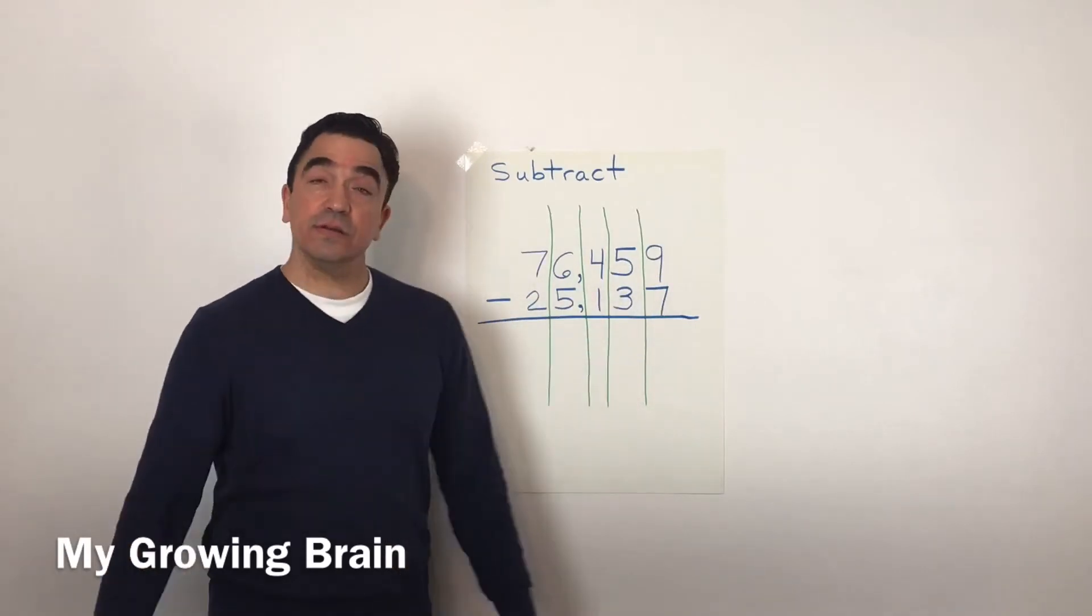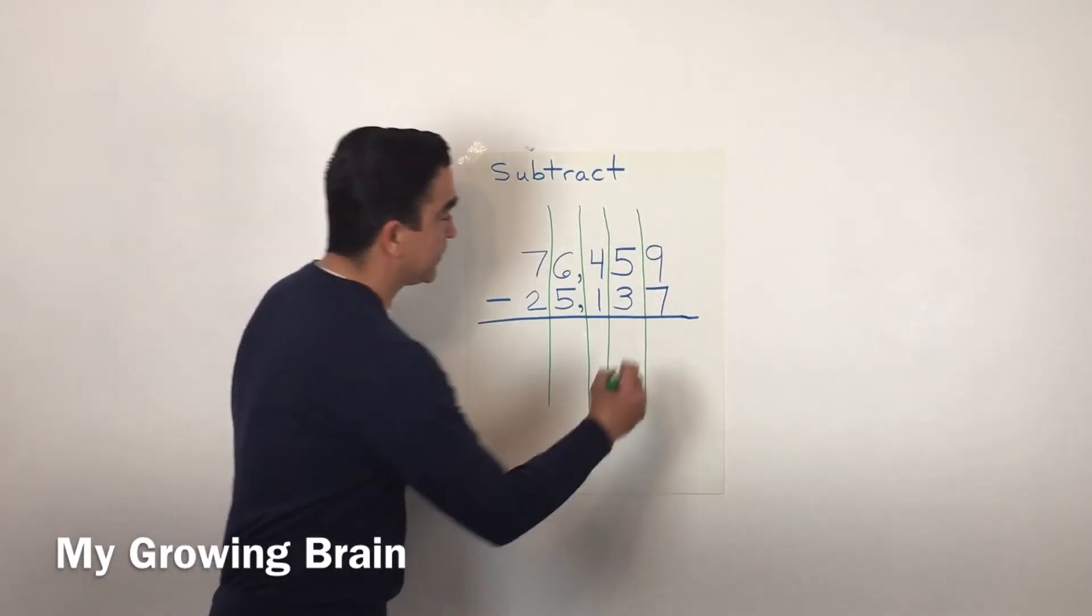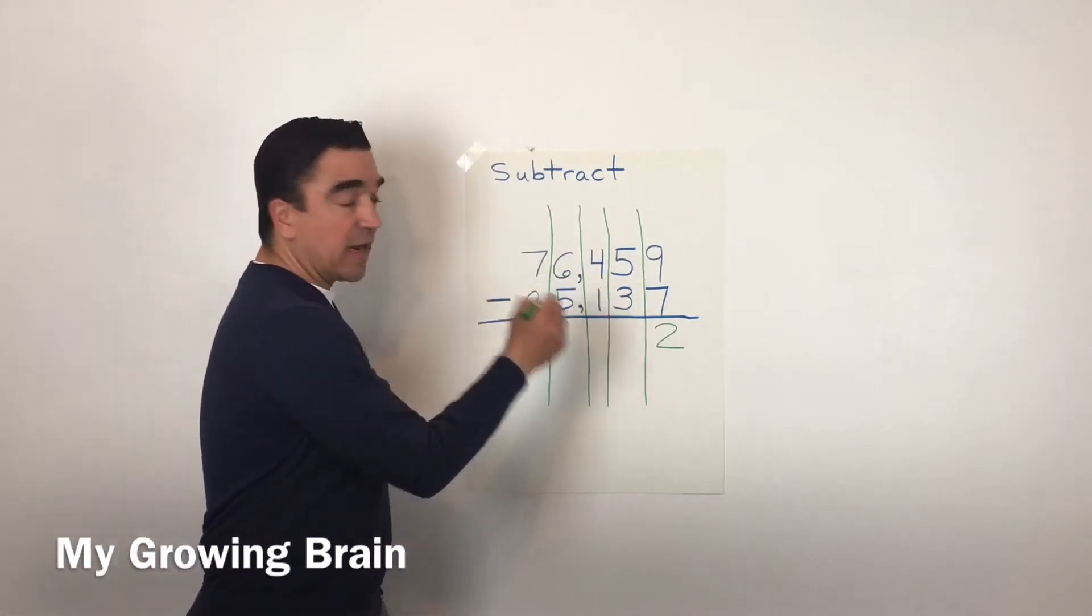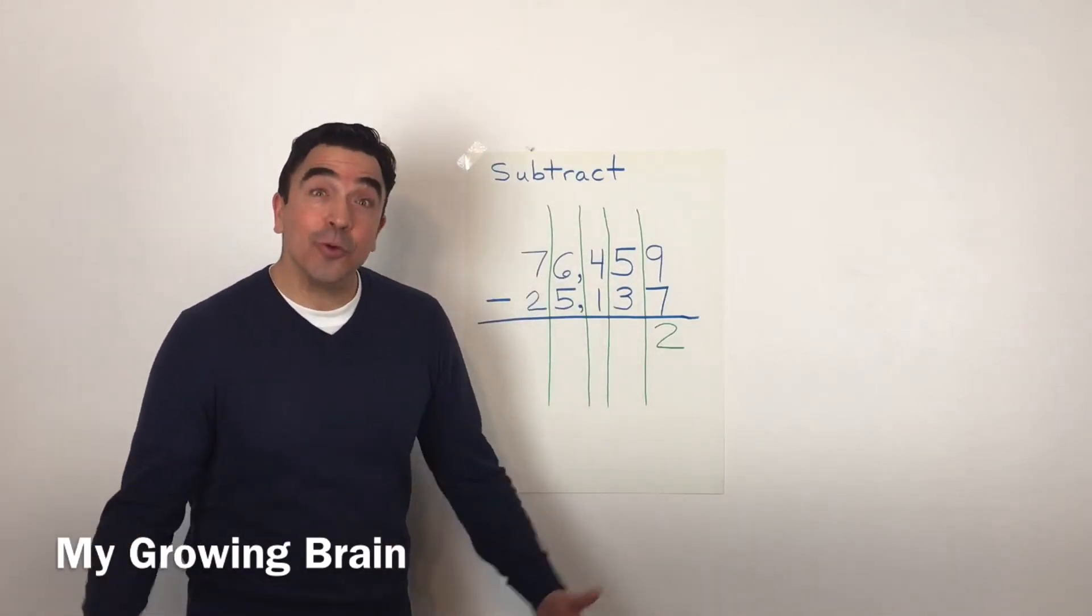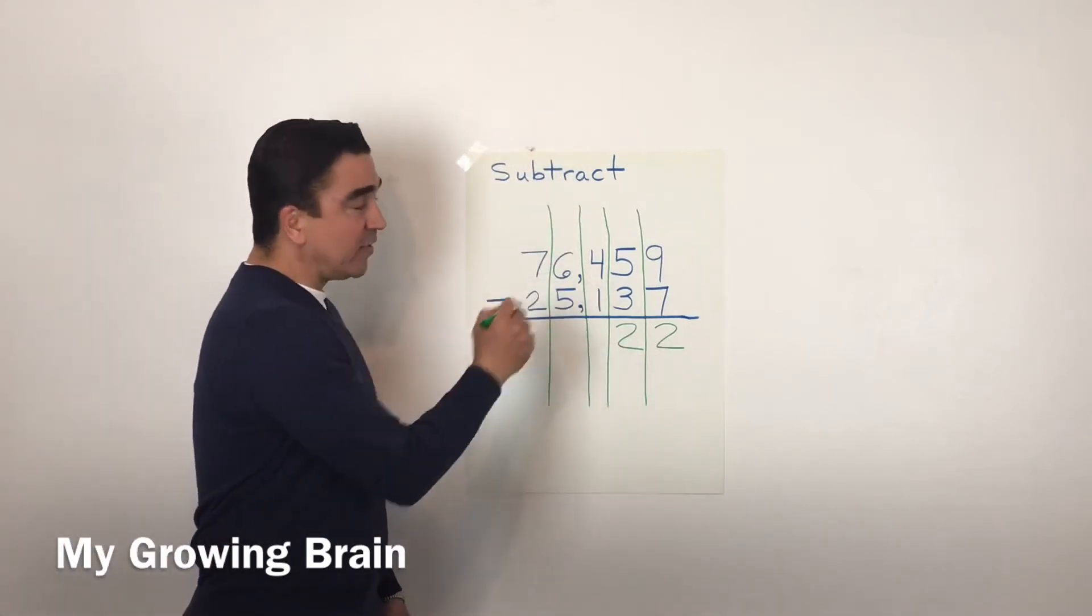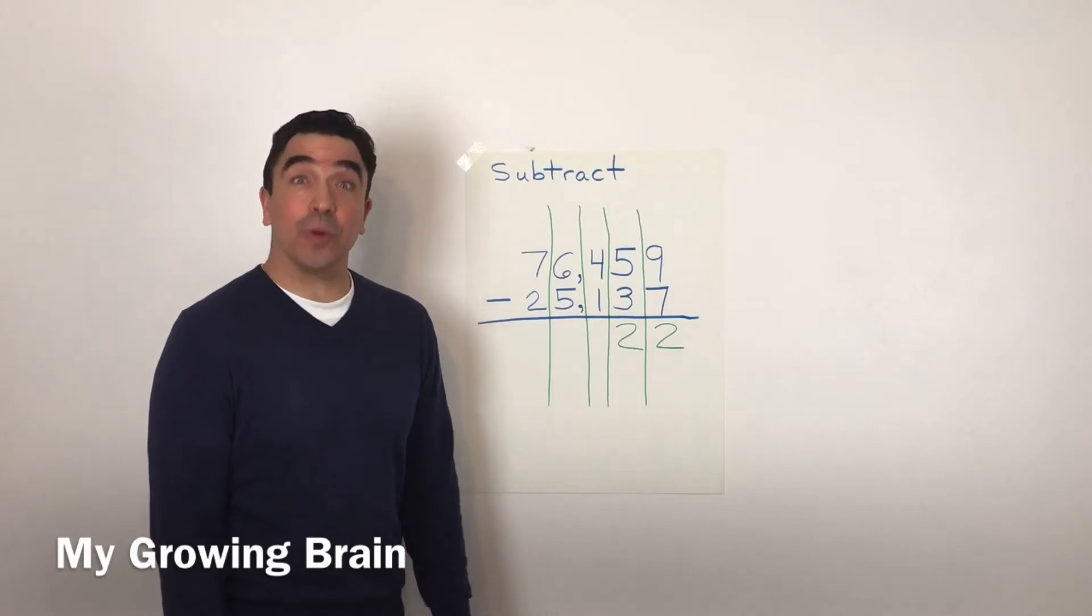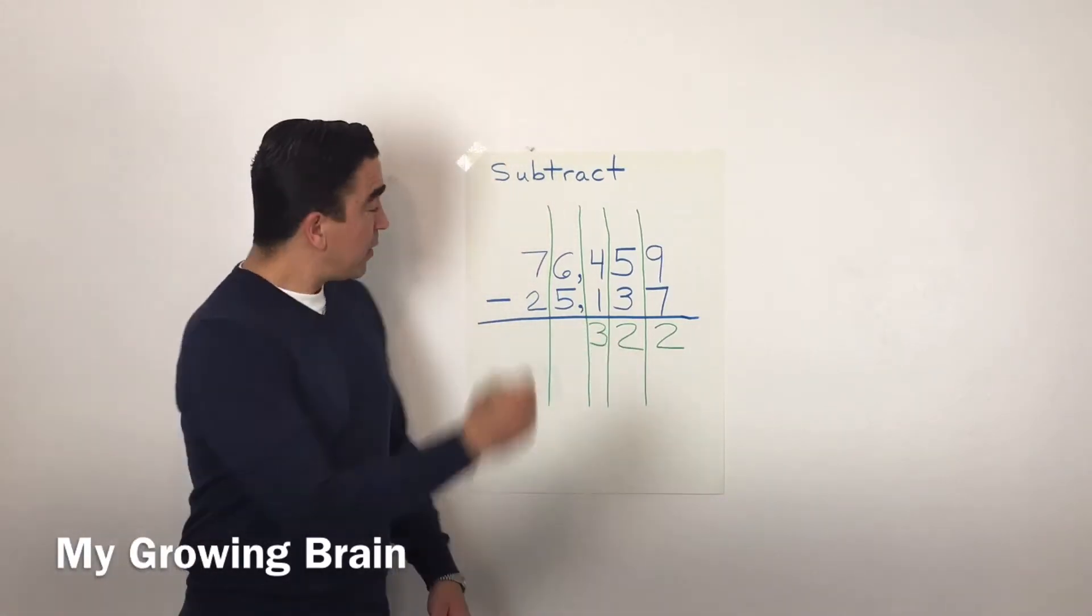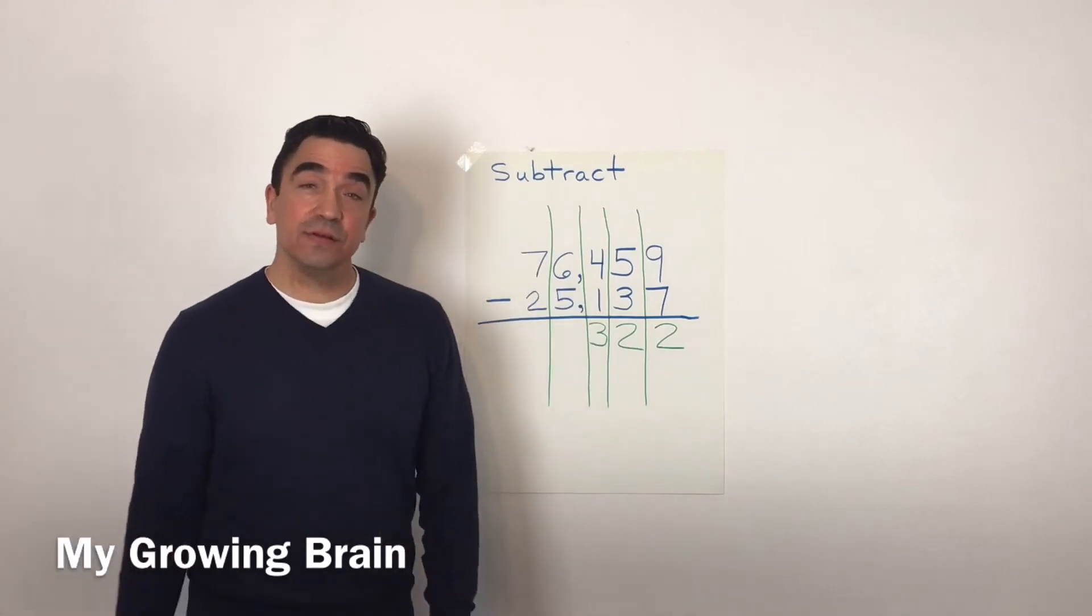Nine minus seven is two. Five minus three is two. Four minus one is three. Six minus five is one.